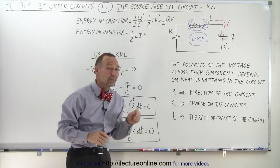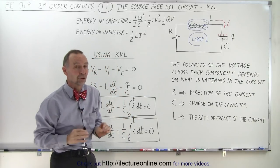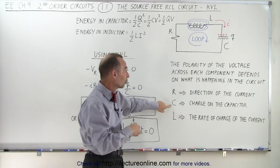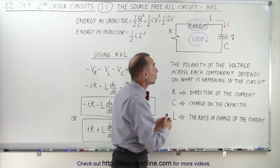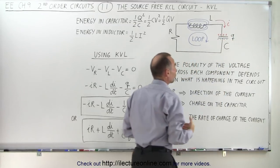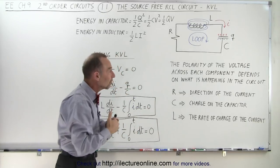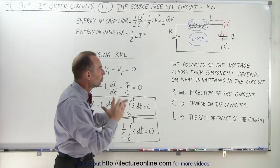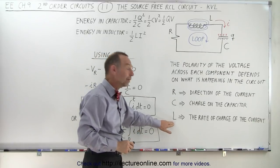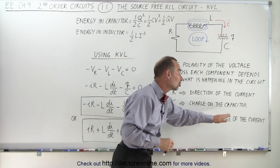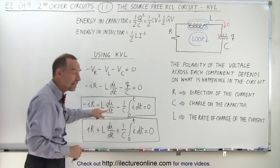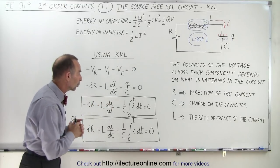Now, the polarity of the voltage across each component does depend upon what is happening in the circuit. The polarity of the resistor depends on the direction of the current. The polarity of the voltage across the capacitor depends upon the charge on the capacitor — you can have positive charge on one side and negative charge on the other, or vice versa, so the voltage orientation across the capacitor will change its polarity depending upon how the charge is stored. The polarity of the voltage across the inductor depends on the rate of change of the current — not on the current itself — and that's why you see a di/dt in the second-order differential equation.